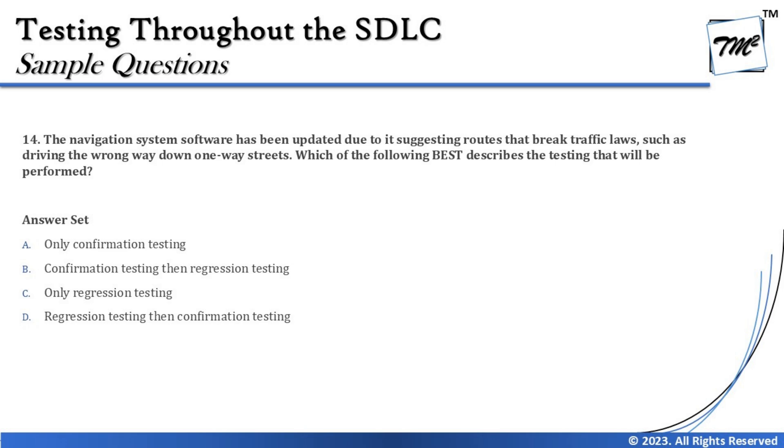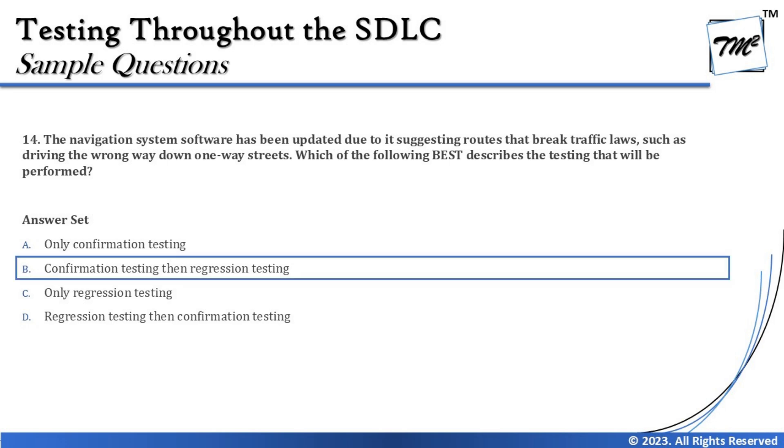The right answer for this question is B — confirmation testing then regression testing — which is the standard process whenever you identify any defect. Post resolution, you perform confirmation testing, followed by a round of regression to complete the process. Sometimes they may not ask you a direct definition; instead they give you an indirect statement and ask what applies. So be open-minded in understanding the situation to reach the conclusion. That's all for this tutorial — feel free to comment below with any queries. Keep learning, keep exploring, and happy learning!